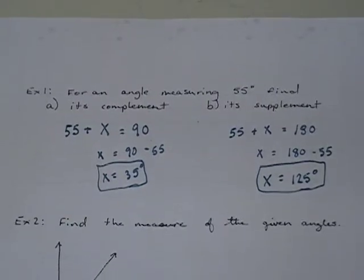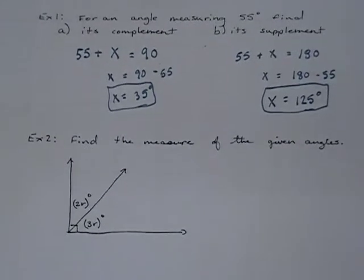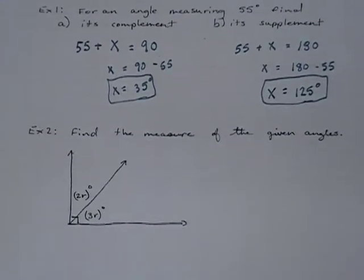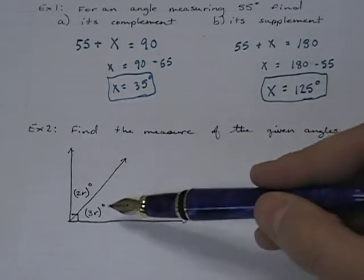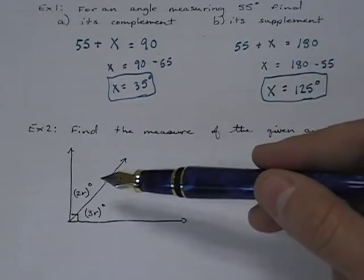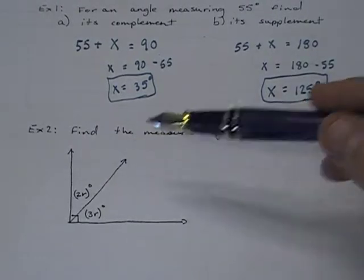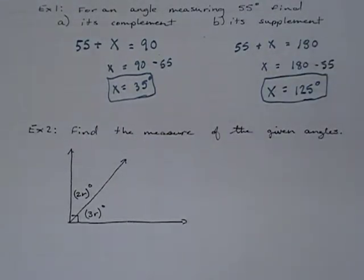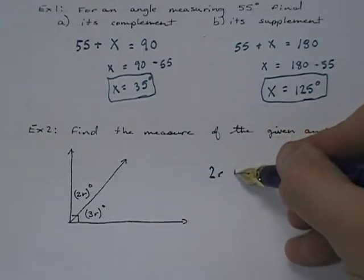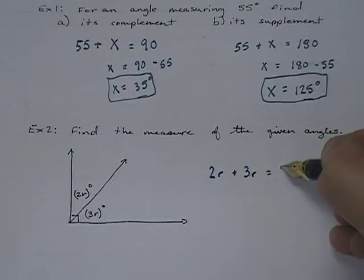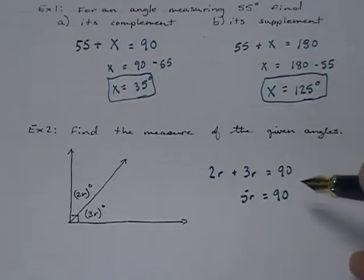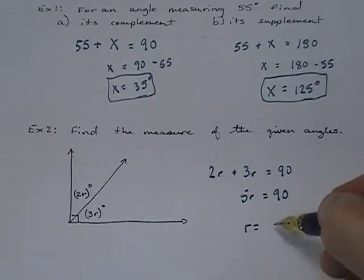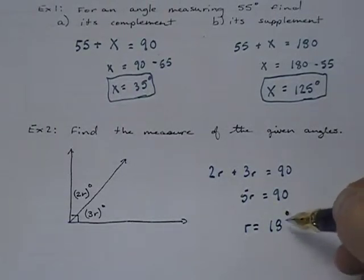Another basic angle problem that we want to work on today is finding the measure of the given angles. We can do this with complements or supplements. We have two angles, both are unknown, and they're shown in a particular figure. Like in this case, they're shown to be complements because they sum to 90. And so again, we'd say 2r + 3r = 90. 5r = 90, and of course, that gives us r = 18 degrees.